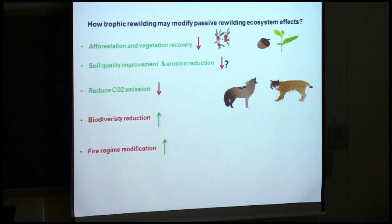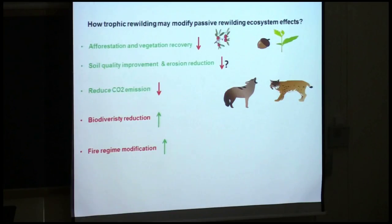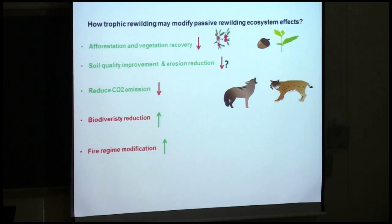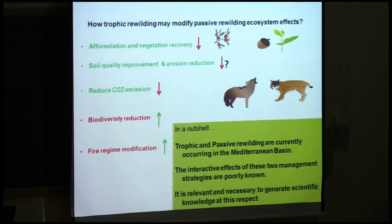Coming back to the ecosystem effects of passive rewilding, we can expect in the context of afforestation and vegetation recovery a reduction in that effect, especially for fleshy-fruited species and for oaks — though we don't clearly know what happens with acorns, the regeneration dynamics of these species may be modified. Soil quality improvement, erosion reduction, and reduced CO2 emissions are very related to afforestation and will probably also be modified. On the other hand, biodiversity reduction in pastoral land communities that decrease with forestation may see an increase, and we can also expect modification of the fire regime.